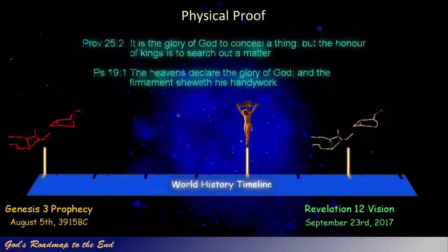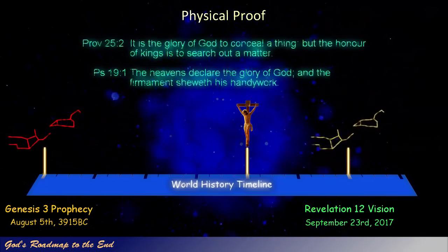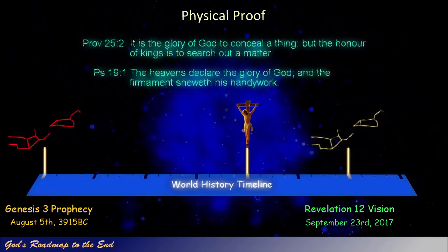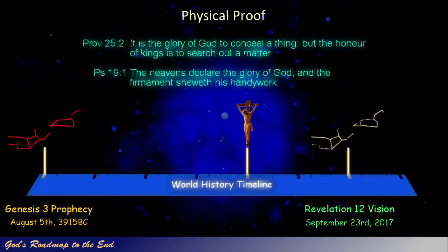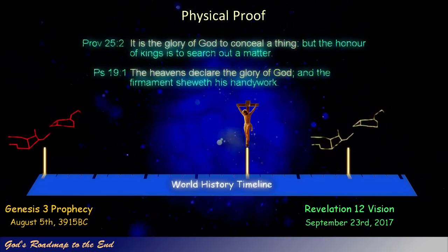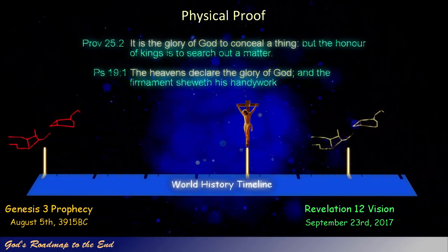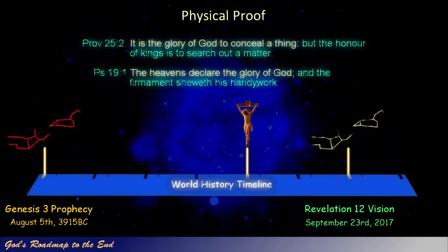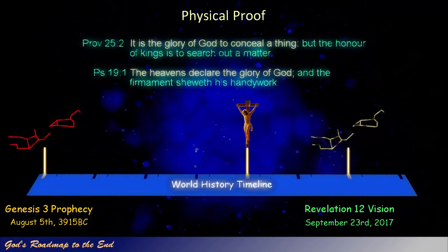Proverbs 25 verse 2: 'It is the glory of God to conceal a thing, but the honour of kings is to search out a matter.' Psalms 19 verse 1: 'The heavens declare the glory of God, and the firmament show of his handiwork.' These two passages tell us that it is God's glory to conceal information, and that the heavens play a part in telling us what information God has concealed. It is obvious that God had a specific purpose in mind when he created the sun, the moon and the stars, and that part of their purpose is to provide us with specific information on God's timing.